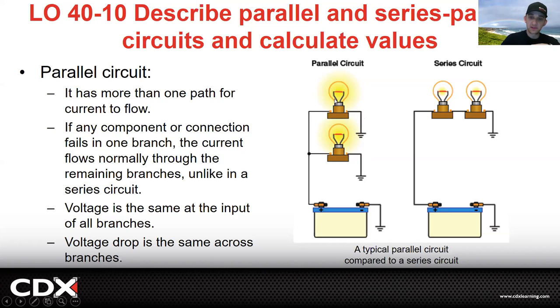If the one bulb goes out, the other one will still work. Voltage is the same at the input of all branches. So if it's 12 volts coming out of here, it's gonna be 12 volts here and 12 volts here. Voltage drop is the same across the branches. So if there's a 2 volt voltage drop here or an 8 volt voltage drop or whatever it may be, it's gonna be the same at each branch.